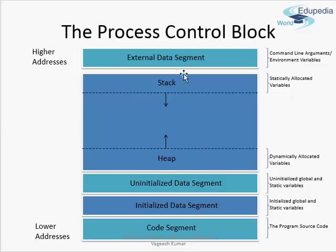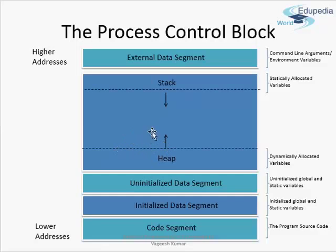Then we have heap and stack, where other variables are stored. The heap grows from lower addresses towards higher addresses, and as you keep adding more variables into the heap it keeps growing. The stack grows in the opposite direction, from higher addresses towards lower addresses. Once these two meet, your program has exhausted its memory. The OS allocates only a particular amount of memory to a program, and if that memory is exhausted the program has to die. You must never overrun the memory of your program.